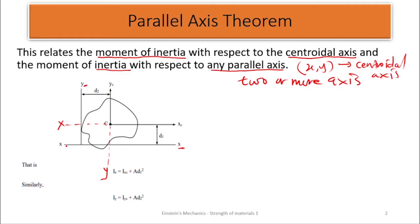We check which axis is parallel to the centroidal axis. Let's call this X1 — X1 is parallel to the centroidal axis X. And let's call this Y1 — the axis Y1 is parallel to the centroidal axis Y. So with the parallel axis theorem, once we know the centroidal X axis and we have another reference axis X1, we can find the moment of inertia about X. Similarly, we can find the moment of inertia about Y since we know the centroidal Y axis and another parallel reference axis.